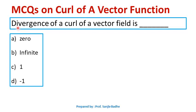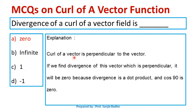Next question: Divergence of a curl of a vector field — options are 0, infinite, 1, −1. When we find curl of a vector, it will be perpendicular to the given vector because it is a cross product. If you then find the divergence of this curl vector, it results in a dot product of two perpendicular vectors, which is obviously 0. Therefore, divergence of curl of a vector field is 0.